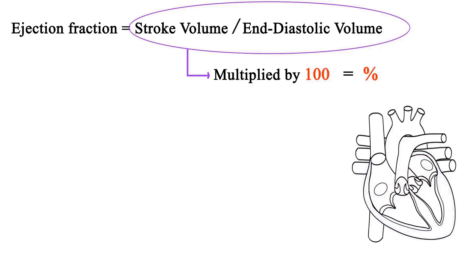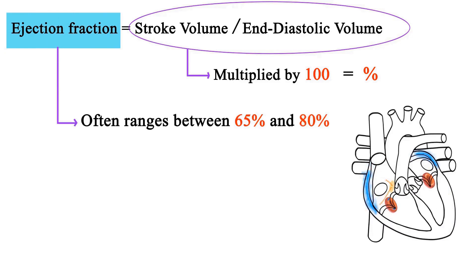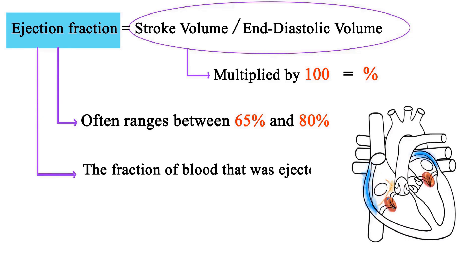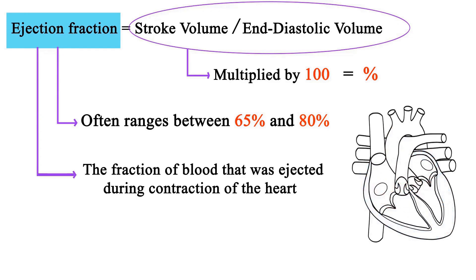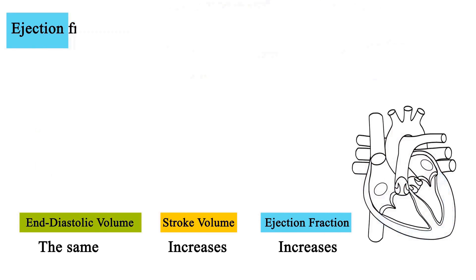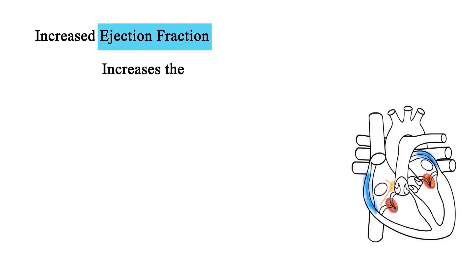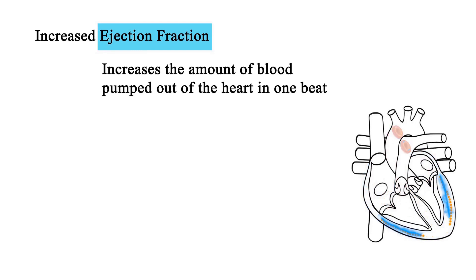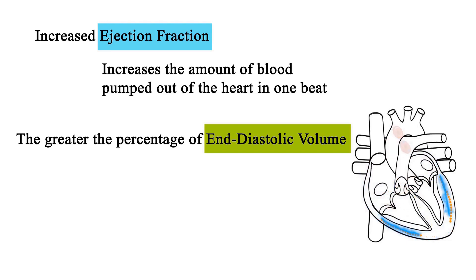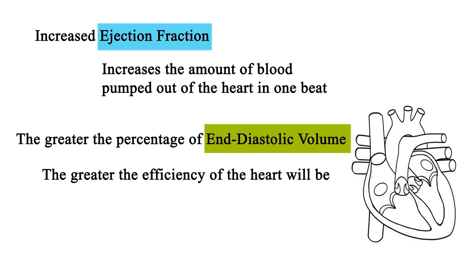For a healthy individual, ejection fraction often ranges between 65% and 80%. Ejection fraction is a fraction of the end diastolic volume, meaning it is the fraction of blood that was ejected during contraction of the heart. The greater the percentage of end diastolic volume that is ejected during the contraction phase of the heart, which is known as systole, then the greater the efficiency of the heart will be.